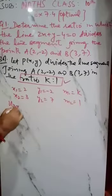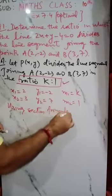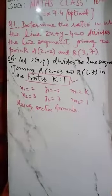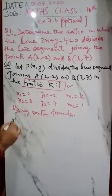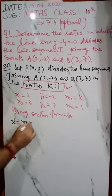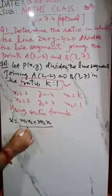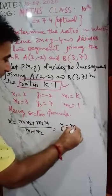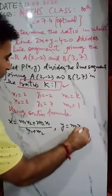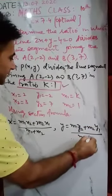Using section formula, we will use it. So now we will find x and y first. So x is (m₁x₂ + m₂x₁)/(m₁ + m₂). This is for x. And for y, replacing x₂ by y₂ and x₁ by y₁, rest is same.